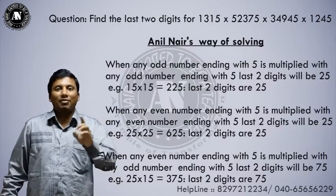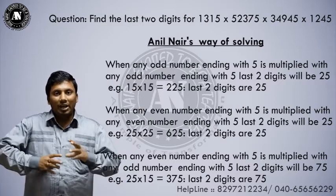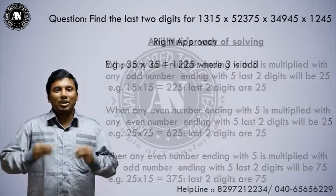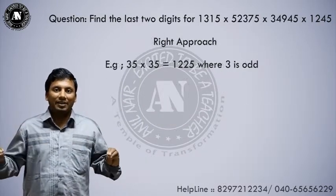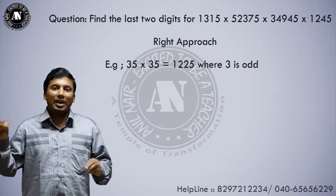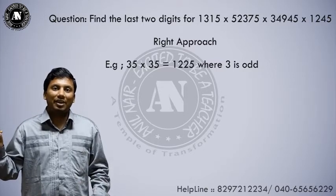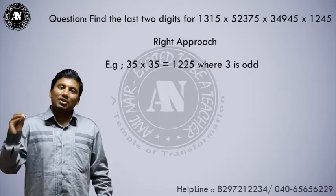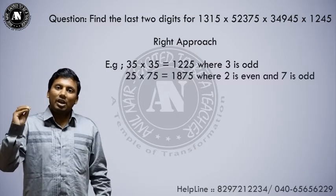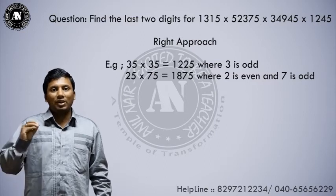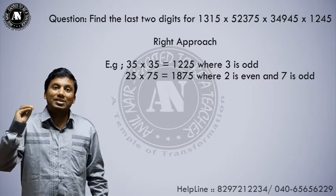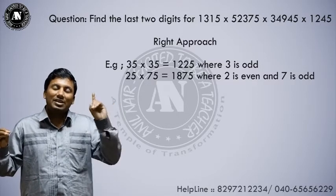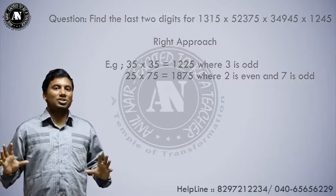Let me take more examples to make you understand this concept. 35 into 35 equals 1225 — the last two digits are 25, and 3 is an odd number, so it's odd 5 into odd 5. Now take 25 into 75: 25 into 75 equals 1875 — the last two digits are 75. Here 2 is an even number and 7 is an odd number. I hope you understood the concept.